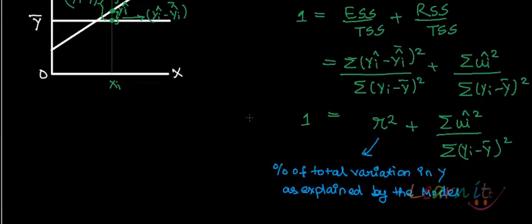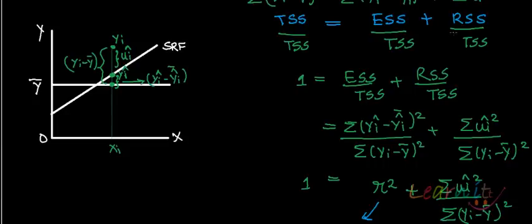In the earlier recording, we derived the formula that TSS is equal to ESS plus RSS, and therefore 1 is equal to ESS upon TSS plus RSS upon TSS, where TSS is total sum of squares, ESS is explained sum of squares, and RSS is the residual sum of squares.